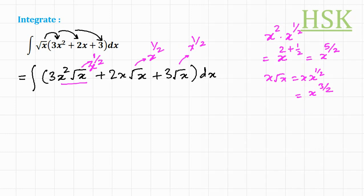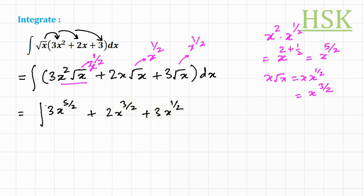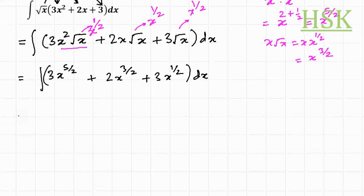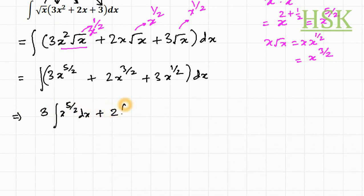So this integral is written as ∫(3x^(5/2) + 2x^(3/2) + 3x^(1/2)) dx. Next, I'm going to write each term as a separate integral: ∫3x^(5/2) dx + ∫2x^(3/2) dx + ∫3x^(1/2) dx.